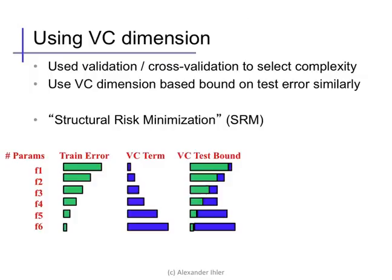We can use the VC dimension risk bound in a similar manner. For a fixed number of training data points, as the complexity of the model increases, the training error will get smaller. But the second term in the upper bound we saw, that depends on the VC dimension, will increase because the VC dimension will increase. So, when you look at the sum of these two, which is the upper bound on our test risk, we find that the sum will decrease for a bit and then increase again as complexity grows. So, one possible model selection procedure is to choose the model that minimizes our VC upper bound on risk. This technique is called structural risk minimization. And it's an alternative to trying to estimate the test error through some validation process.